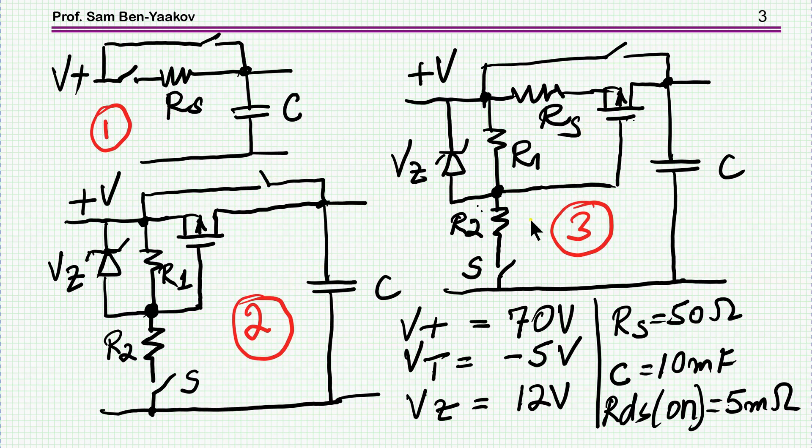Then we have another configuration, also with a transistor, but with the resistor here at the source of the transistor. Again, we have 12 volts here, threshold is 5 volts, and there is a charging through here, and then eventually we turn on the main switch.